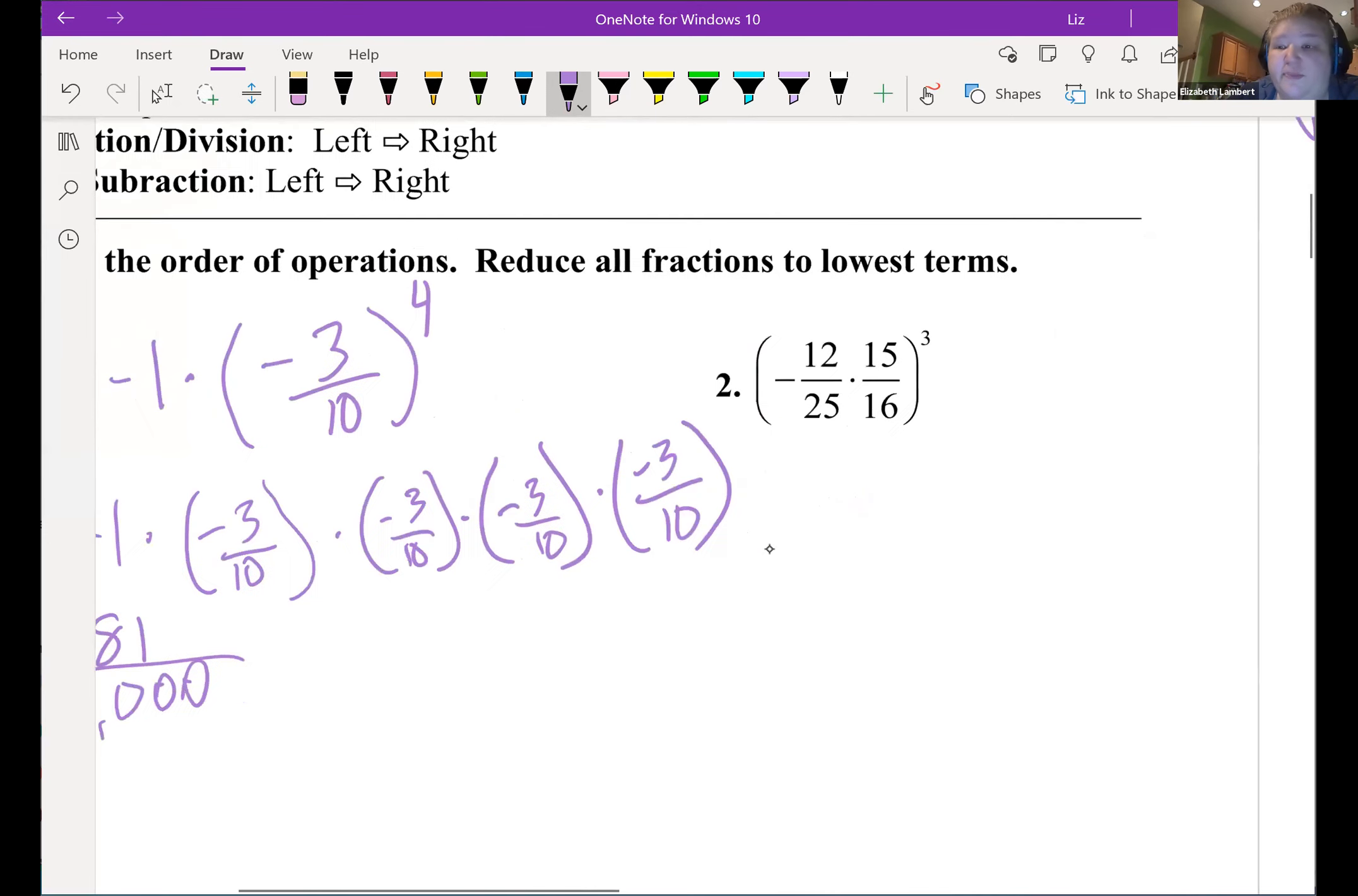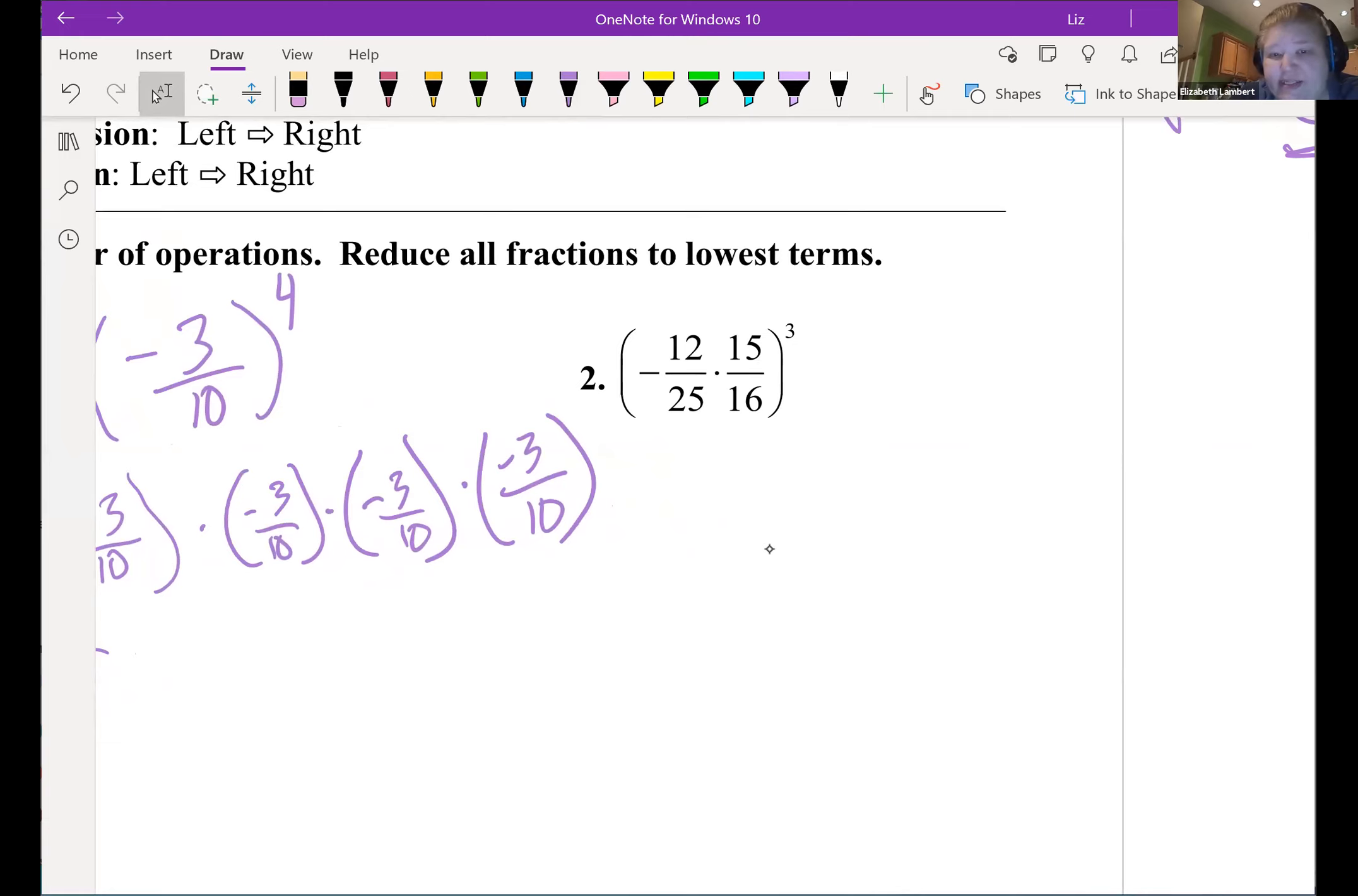Now the flip side of that is not every time you have a minus inside the parentheses with an exponent is the minus going to go away. So here we're going to crunch the inside fractions together first, but then we're going to have three negative numbers being multiplied. Two of them will become positive, but then the third one will flip it back to negative. But let's deal with that inside first.